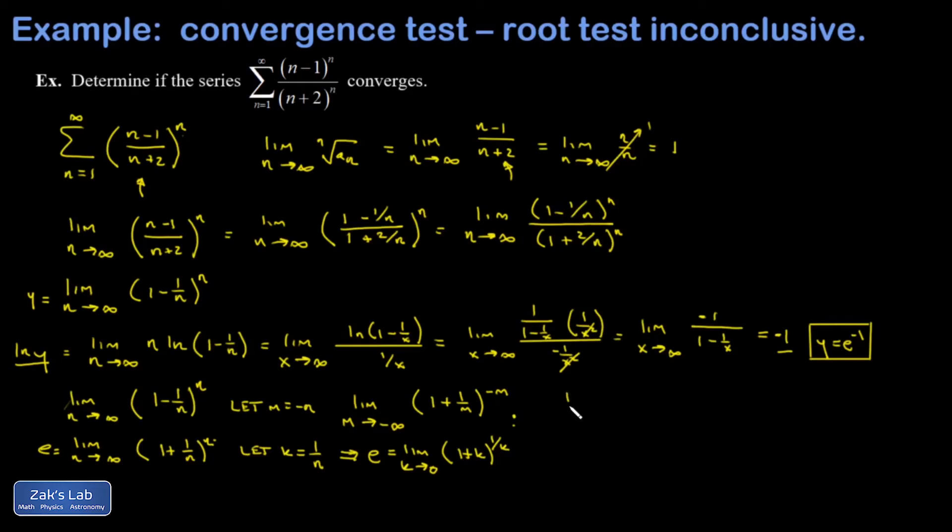I can say let k equal negative 1 over n. That means the exponent n would be negative 1 over k. It also means my n goes to infinity limit becomes a k goes to 0 limit. So I get the limit as k goes to 0 of 1 plus k to the negative 1 over k. This looks a lot like our new definition of e. I just have to write it as a fraction, limit as k goes to 0, 1 over 1 plus k to the 1 over k. That denominator I now recognize as e. I get 1 over e, which is e to the negative 1. Same answer.